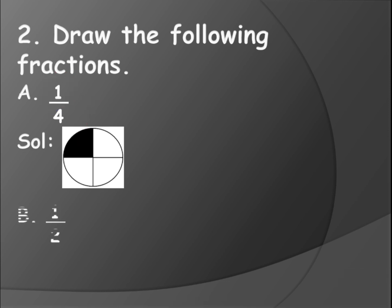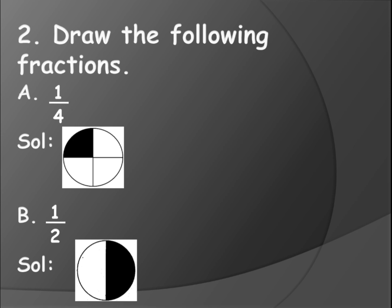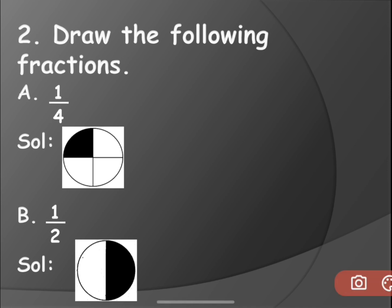Let me show you another one - one by two. Here also you can take any shape: circle, square, rectangle, any shape. But it should be divided into two equal parts - why? The denominator is two. And the numerator is one, that means in those two parts you have to color one part. I have taken a circle which I have divided into two parts and colored one part. You can color any one part - it's your wish. For example if it is three by four, you can take a square, divide into four equal parts and color three parts.